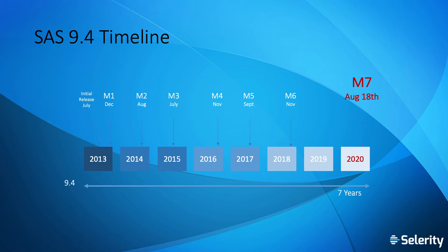This presentation is an overview of some key aspects of the SAS 9.4 Maintenance 7 release. If you would like to dive deeper into the technical details, or want information on other aspects of M7 that we aren't covering, you can find that in the What's New in SAS 9.4 documentation on the SAS website. You can also check out the SAS Guide to Software Updates and Product Changes.